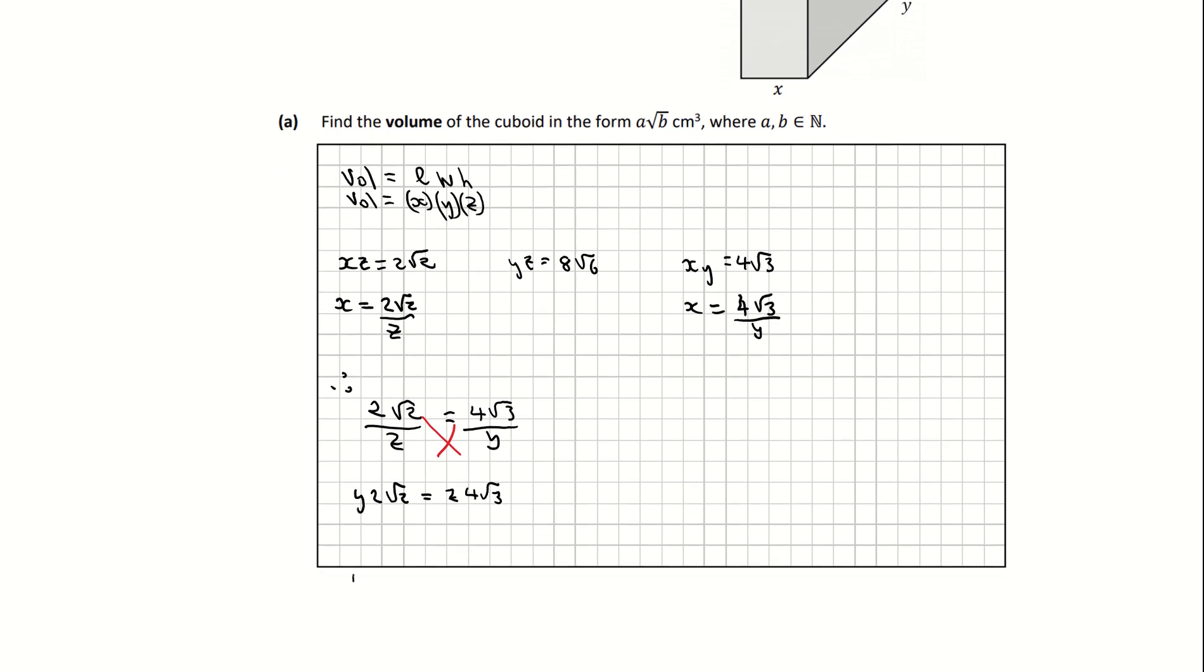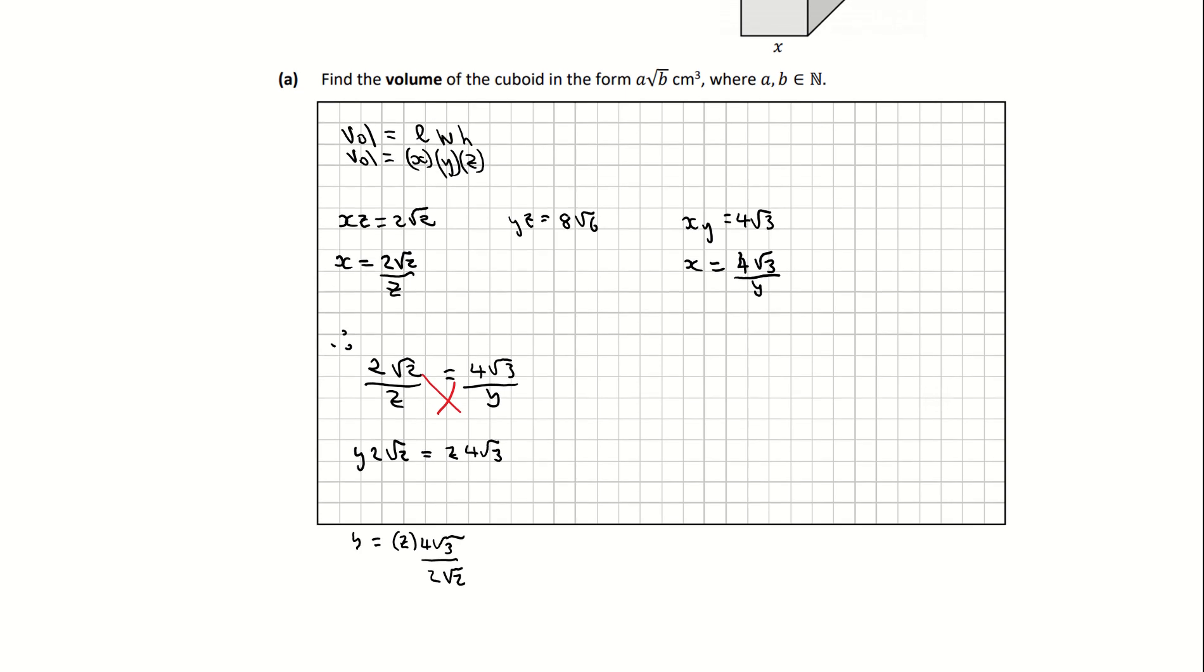I'm going to get y on its own, so I'm going to divide across by 2 root 2. That means that y equals z times 4 root 3 all divided by 2 root 2. If you go to your calculator and divide 4 root 3 by 2 root 2, it simplifies as root 6. So therefore y equals root 6 z, and you can put that z in a bracket, just make sure it's outside of the square root.